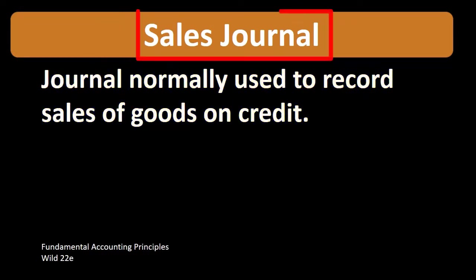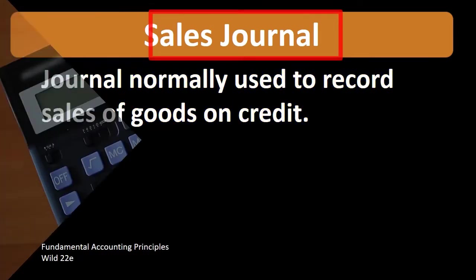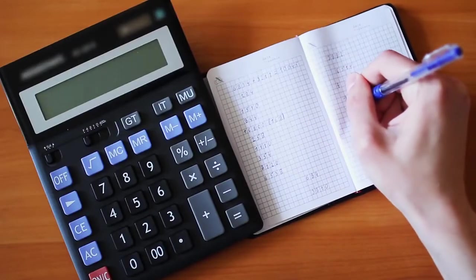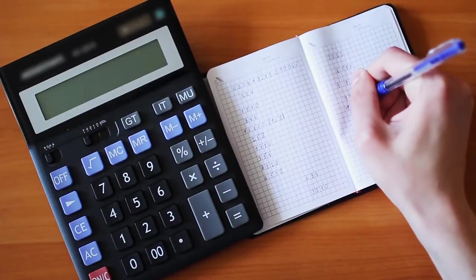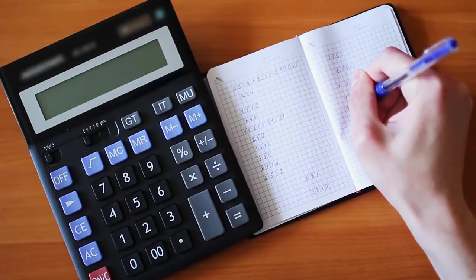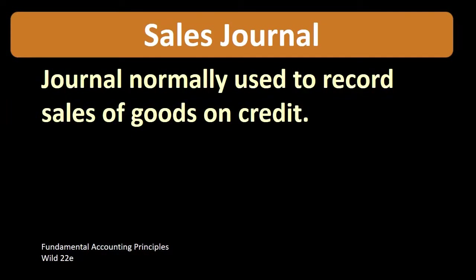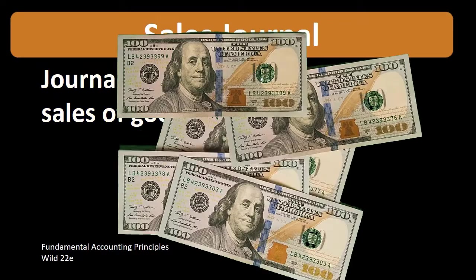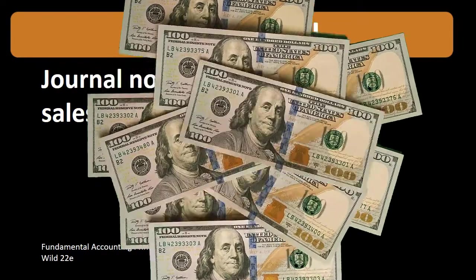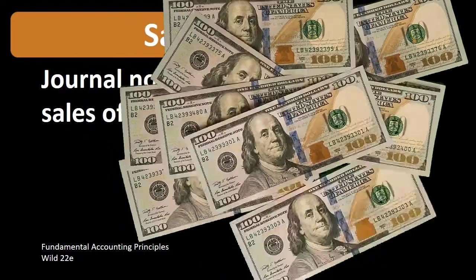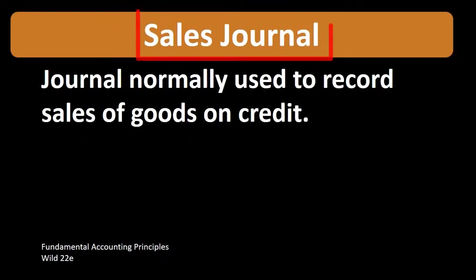We're going to use the sales journal as a type of shorthand journal to record a particular type of sales — those sales that we make on credit, those sales that we do not receive cash for, those sales that we're going to have accounts related to in the sales journal.